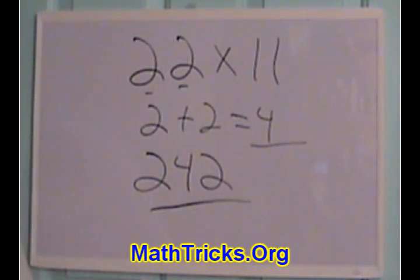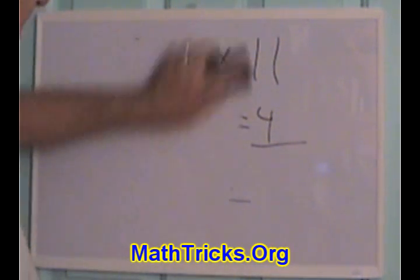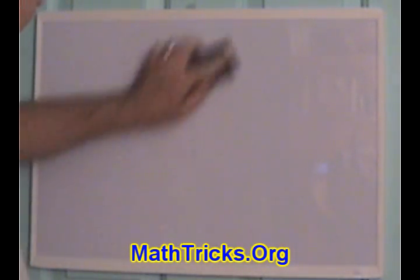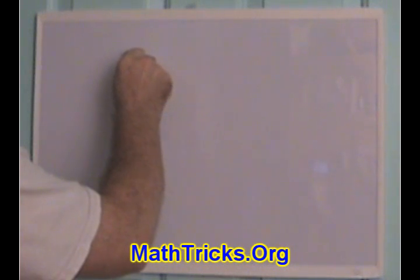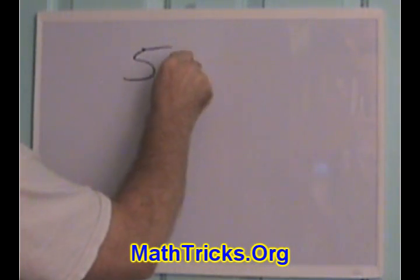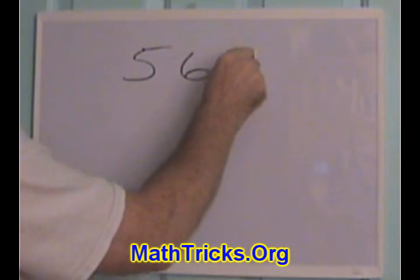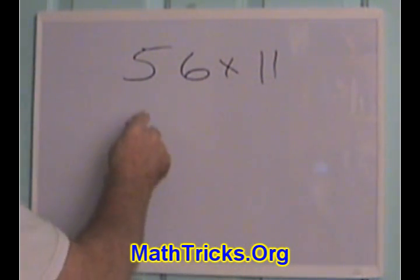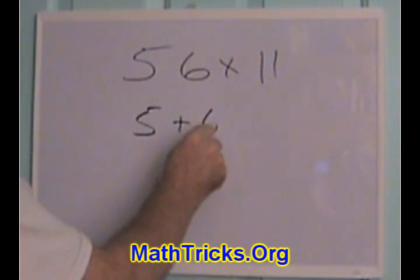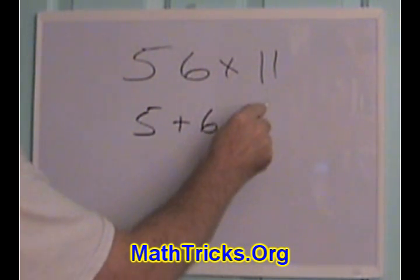Well, we'll try one more. It's a little more difficult. Let's try 56 times 11. So, again, same method. 5 plus 6 is equal to 11.